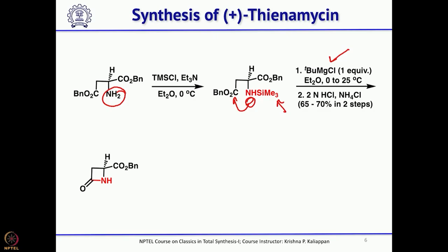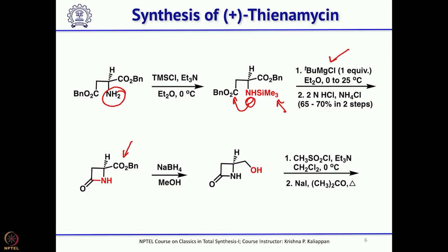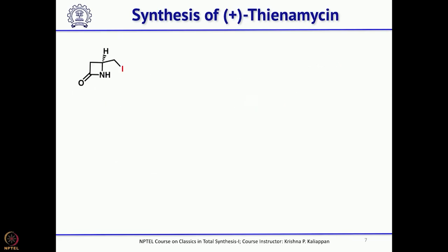Once the 4-membered lactam is formed, the ester group is selectively reduced in the presence of the lactam using sodium borohydride in ethanol to give the primary alcohol. The primary alcohol is then converted to the iodide in two steps: first convert the primary hydroxyl to the mesylate, then perform a Finkelstein reaction by treating the mesylate with sodium iodide in acetone to get the corresponding iodide.